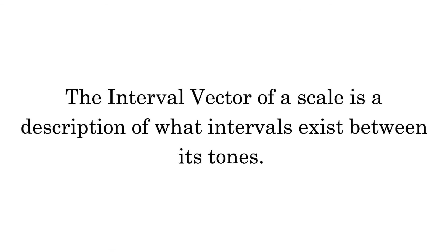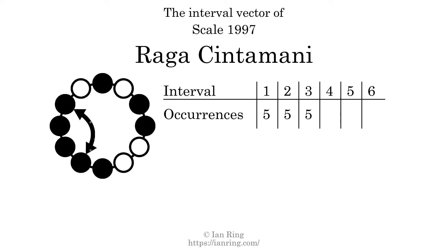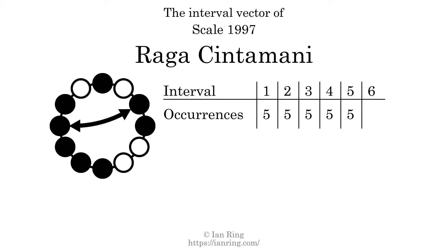The interval vector of a scale is a description of what intervals exist between its tones. There are 5 intervals with the size of 1 semitone, 5 with the size of 2 semitones, 5 with the size of 3 semitones, 5 with the size of 4 semitones, 5 with the size of 5 semitones, and 3 intervals with the size of 6 semitones.